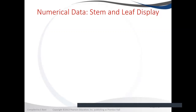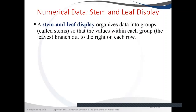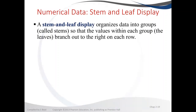Let's learn how to build a stem-and-leaf plot. A stem-and-leaf plot is a way of summarizing data so that we can see the distribution of that data. With the stem-and-leaf plot, it organizes data into groups called the stems, and each stem will have the leaves. The stem represents the first digit of the value, and the leaves represent the second digits of your values.